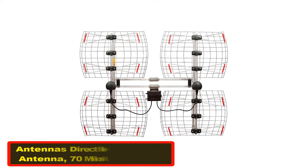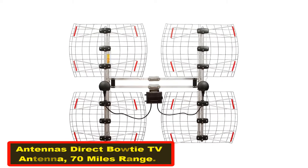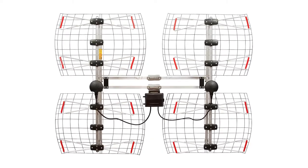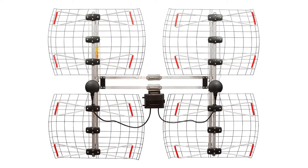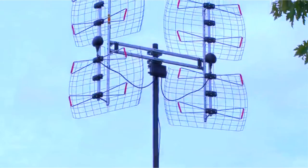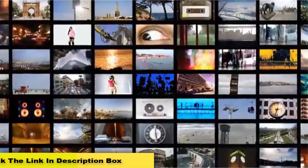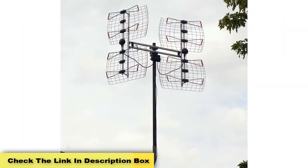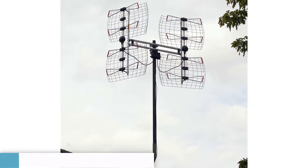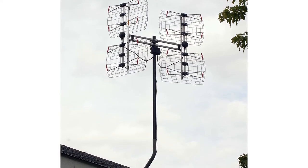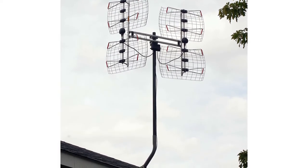Number three: Antennas Direct 8-element bowtie TV antenna with 70-mile range. This deep fringe over-the-air television receiver has the highest gain of any antenna on this list - 17.4 dBi. If you live on the edge of town far away from the nearest transmitters and feel comfortable mounting an 8-element bowtie antenna on your roof, then this antenna's for you.